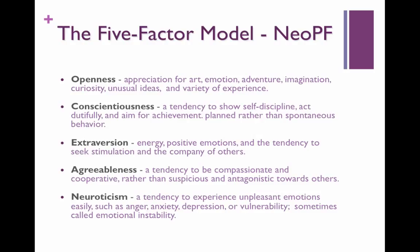The C is for conscientiousness — this is exactly what it says. These are people who are very self-disciplined, dutiful, planned in their approach to their day and tasks, and orderly. Extroversion measures whether people are extroverted — they'd have lots of positive emotions, high energy, and they like to be around other people. People low on the extroversion scale are going to be introverted. They like to spend time by themselves or with a trusted other person, prefer a few relationships over many, and get their energy from being by themselves. A is for agreeableness — this is the tendency to be compassionate and cooperative, with the opposite being suspicious and antagonistic, generally more disagreeable.